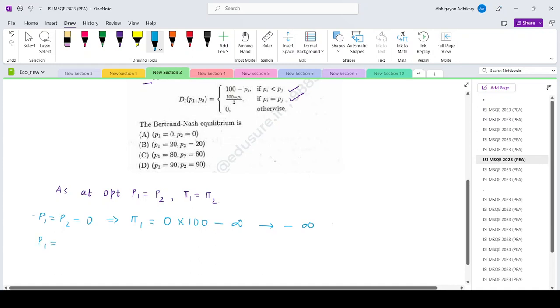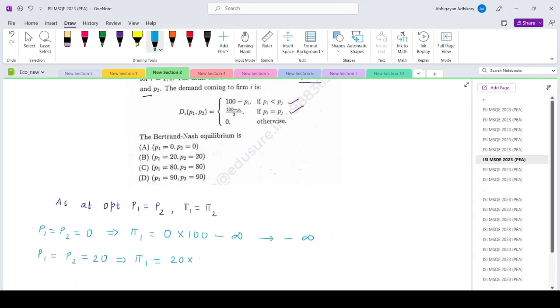What about the second option? P1 equals P2 equals 20. In this case, price is 20. If the price is 20, the total demand would be 100 minus 20, which is 80.